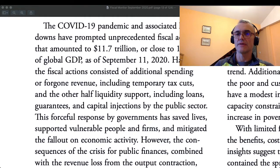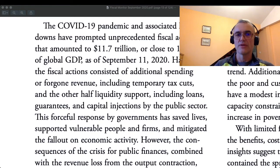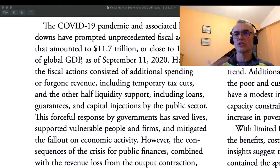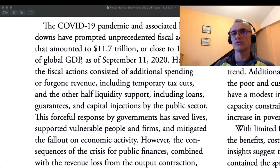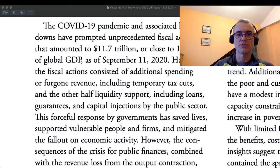Essentially, when the government practices active fiscal policies, the government can use the fact that it can borrow money at much better conditions than most businesses. So the government can assure additional liquidity in the system by stepping in and facilitating the process of lending from banks to companies. We could say that the government is essentially a guarantor or even directly a provider of credit for companies.